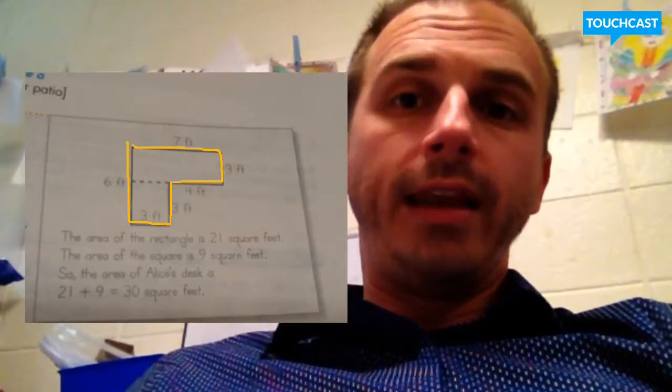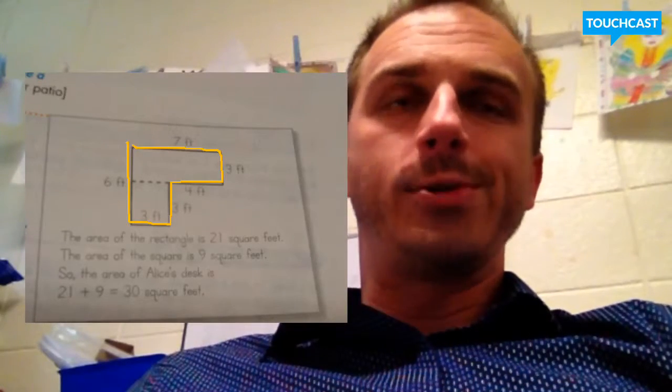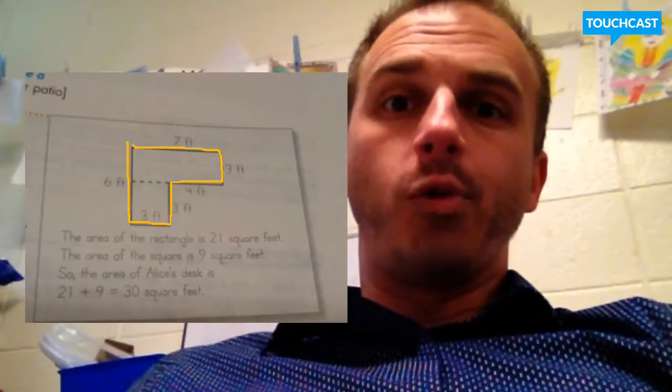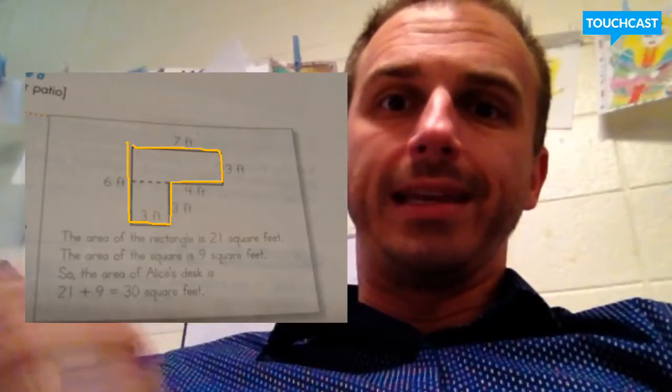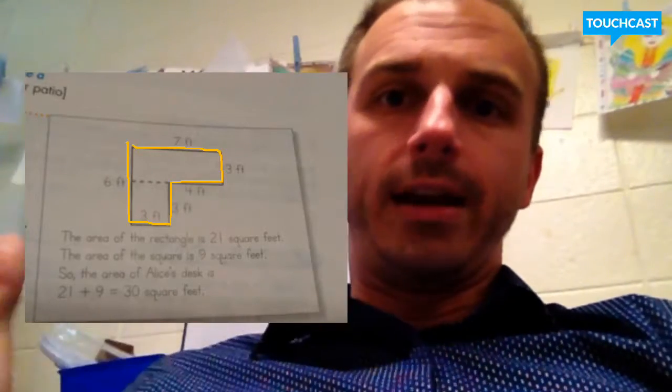We've been finding the area of normal shapes like a rectangle or a square. This time we're going to be combining the shapes to make an irregular shape and finding the area of that entire shape.